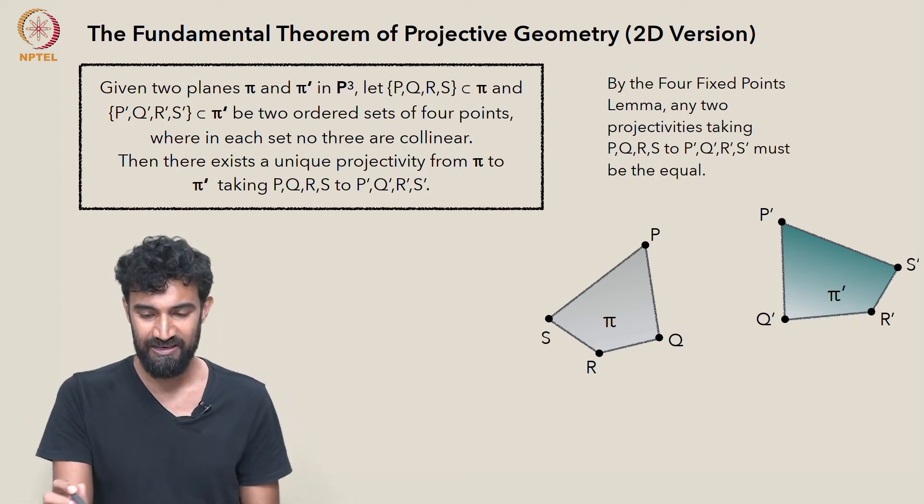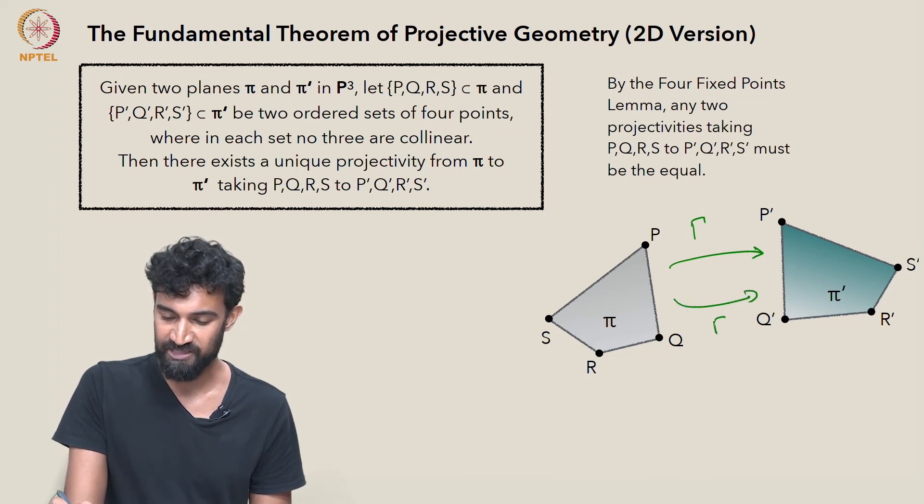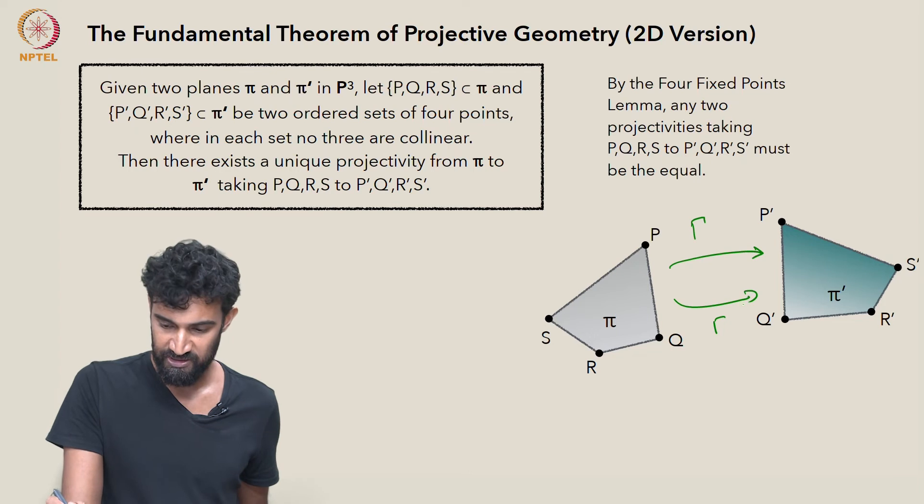Well, we know that if γ is one projectivity taking P, Q, R, and S to P′, Q′, R′, S′, and γ′ is another projectivity doing that.